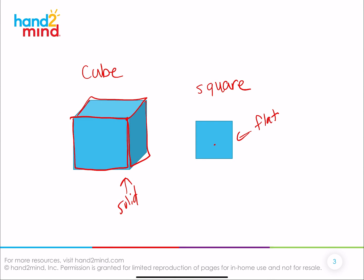Are there other ways they're different? Absolutely. This one has only four vertices and this one has eight vertices. You can't see that other one on the other side, but there are eight vertices. So we're kind of comparing these two pieces together. Let's look at two more.